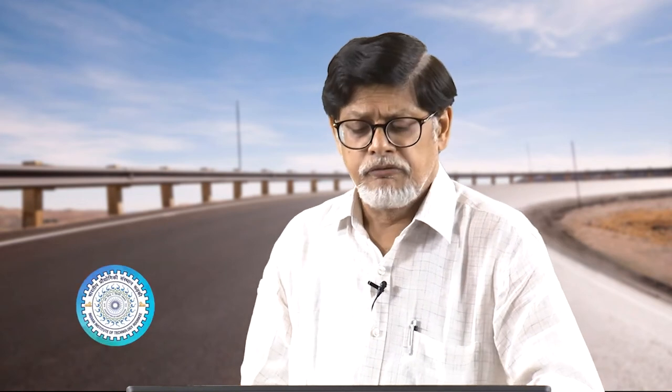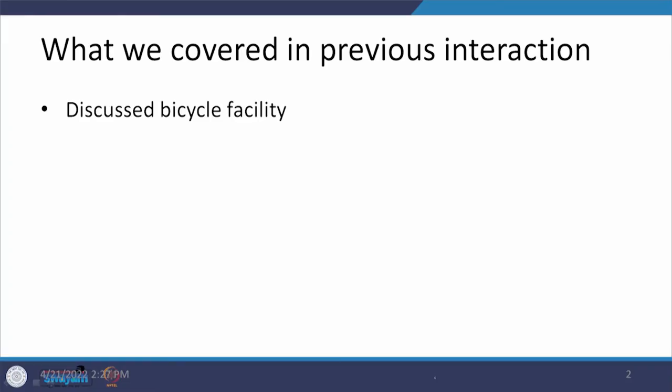Dear students, we are back in the class of Geometric Design. We have been discussing the cross-sectional elements and a large number of elements have been discussed so far. In the previous interaction, we started with a very specific facility which is a bicycle facility, and under that bicycle facility we talked about the various classifications. We also looked at the width which needs to be provided, or the horizontal or vertical alignment features which need to be provided on different types of bicycle facilities.